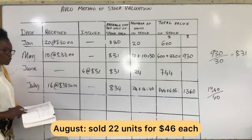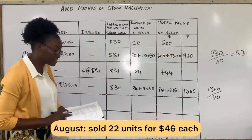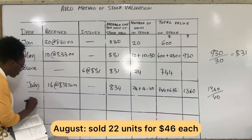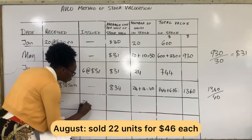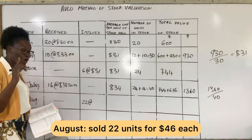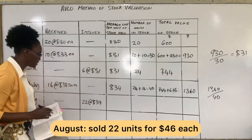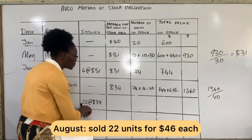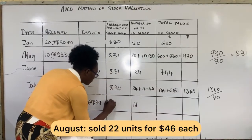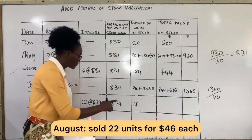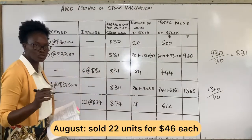In August we are issuing 22 items, sold for $46 each, but none were received. We issue at the last calculated average cost of $34. 40 minus 22 leaves us with 18 items remaining in stock. 18 multiplied by $34 gives us a total stock value of $612.